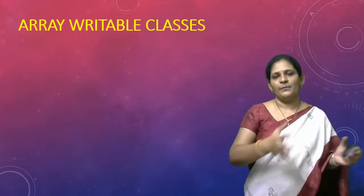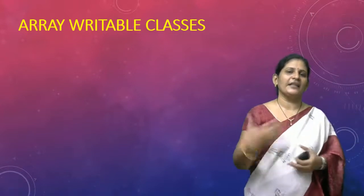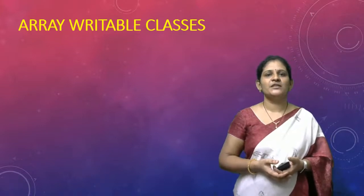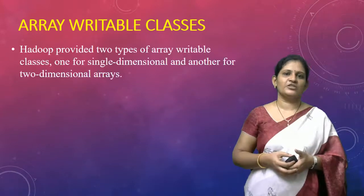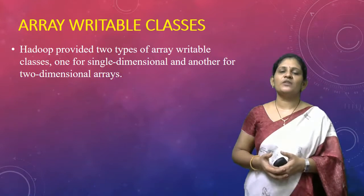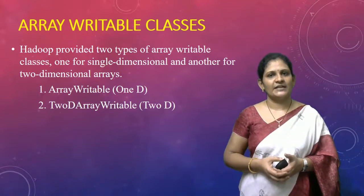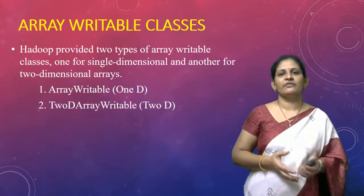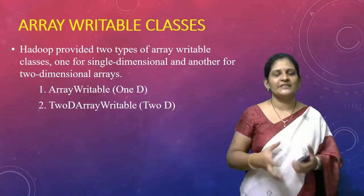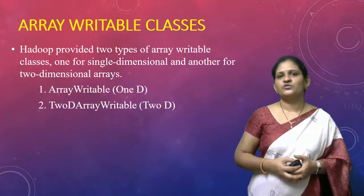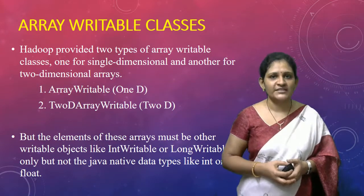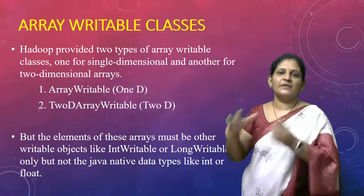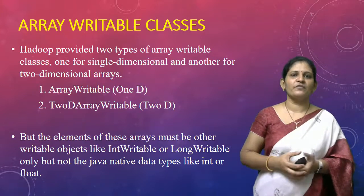Apart from primitive writable classes, we also have array writable classes. An array is a collection of homogeneous elements. For a single-dimensional array the writable class is ArrayWritable, and for a two-dimensional array the class is TwoDArrayWritable. The only constraint is that whatever data you store into these objects must be of type Writable objects — you cannot store primitive type data directly into these objects.